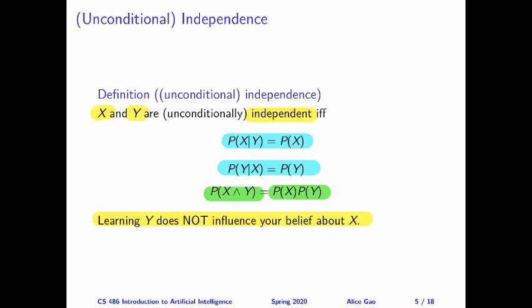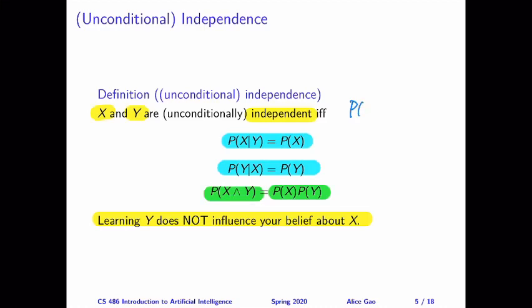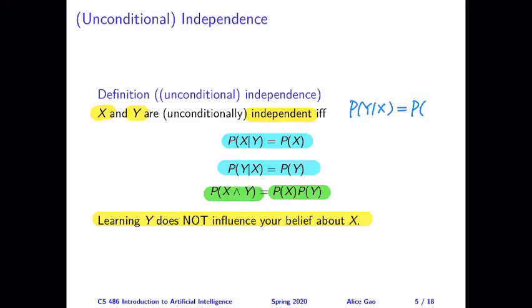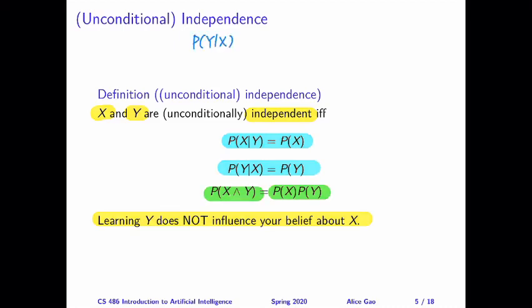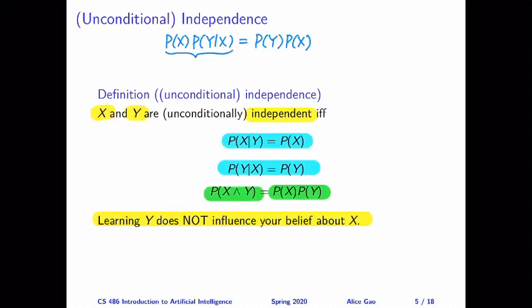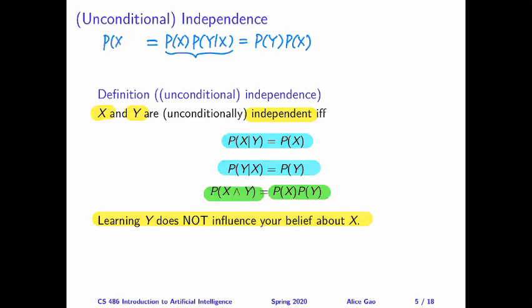Let's take the second formula as an example. If we start with the second formula and multiply by p(x) on both sides, then on the left-hand side you can see that this is exactly part of the product rule or the chain rule. By either of those rules, the left-hand side is equal to the joint probability of x and y. This is exactly how we recover the third formula, so you can see that these expressions are all equivalent.